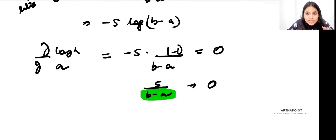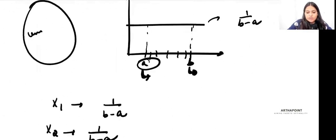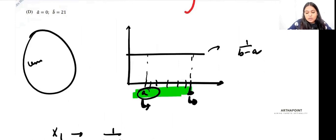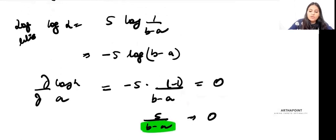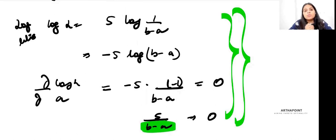This can equal 0 only when B-A is infinity, since anything divided by infinity is 0. But B-A is not infinity; B-A is some finite range. So you cannot use this standard log likelihood method to find MLE for uniform distributions.